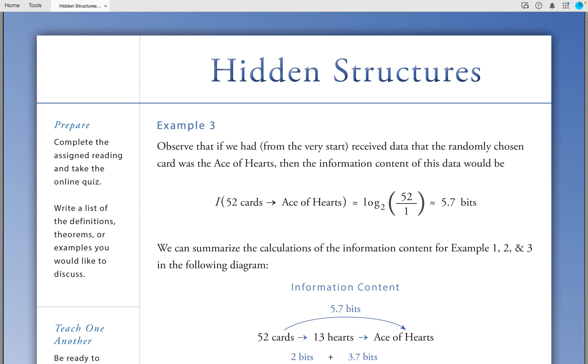Example 3: Observe that if we had, from the very start, received data that the randomly chosen card was the ace of hearts, then the information content of this data would be log base 2 of 52 divided by 1, which is equal to 5.7 bits.